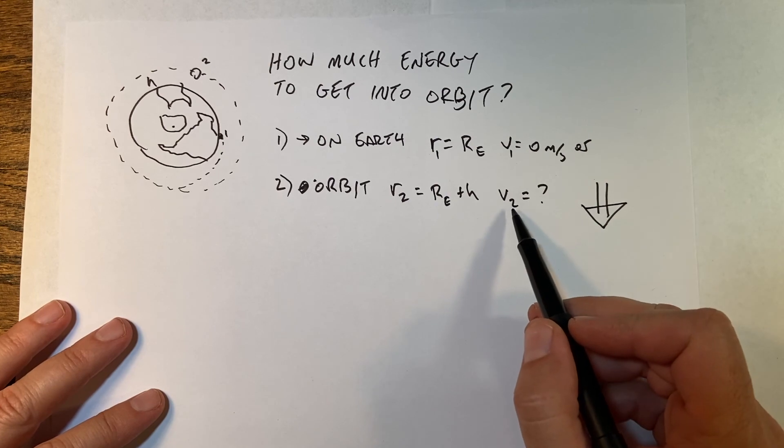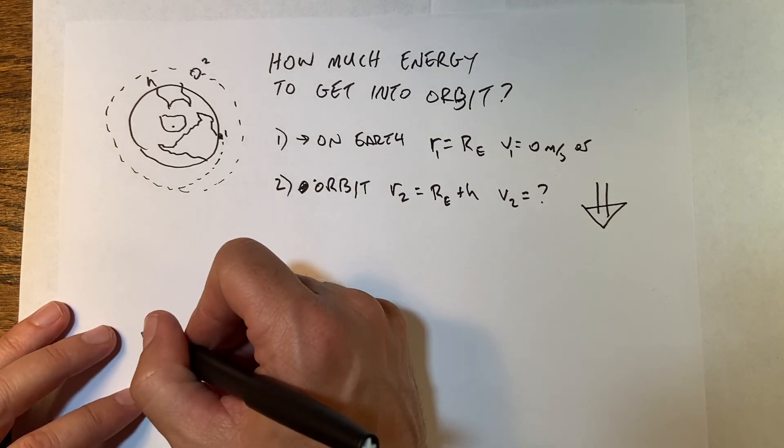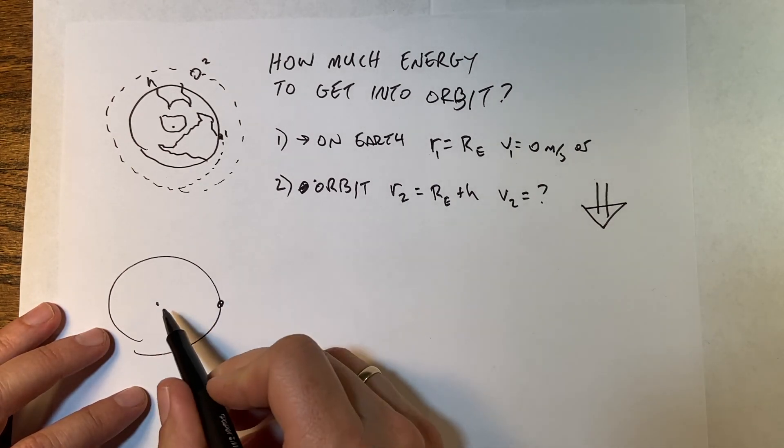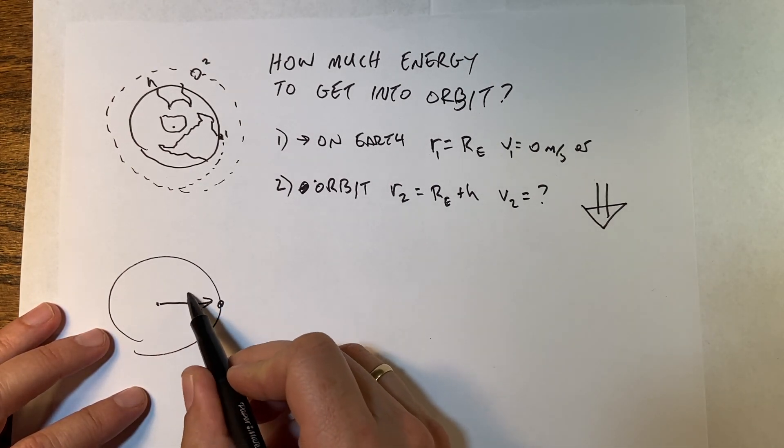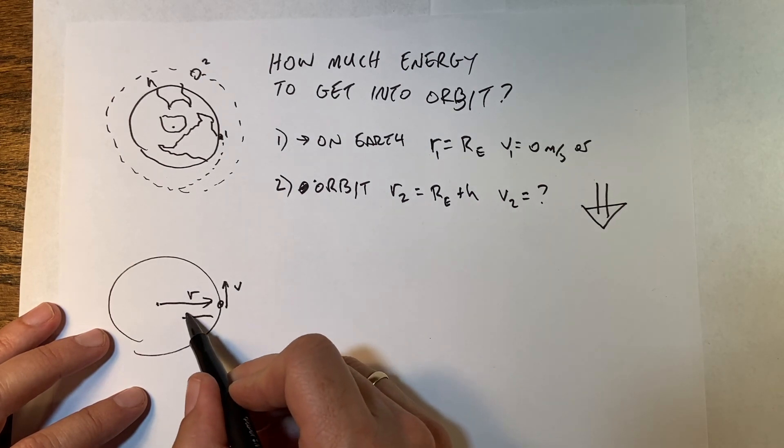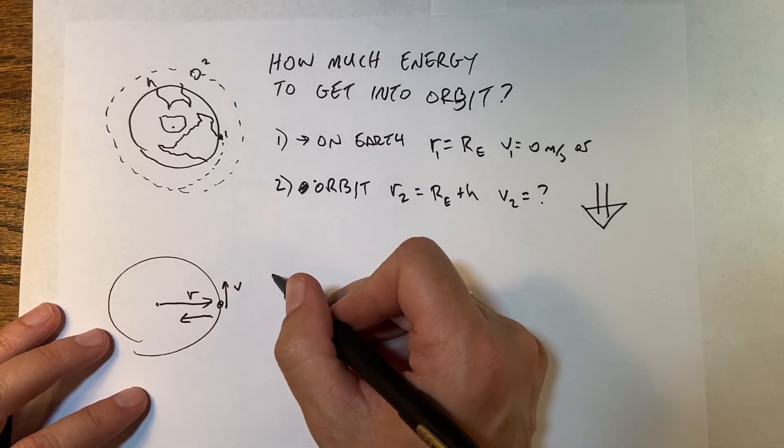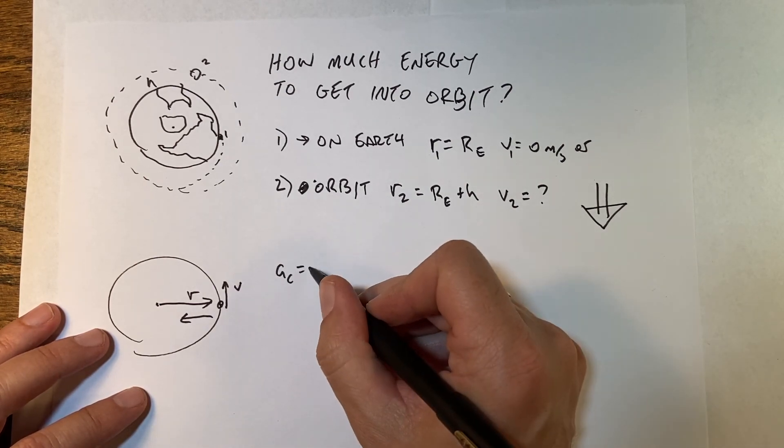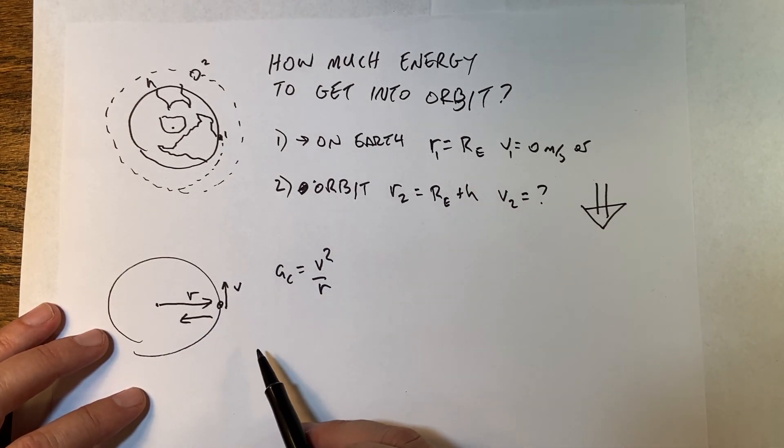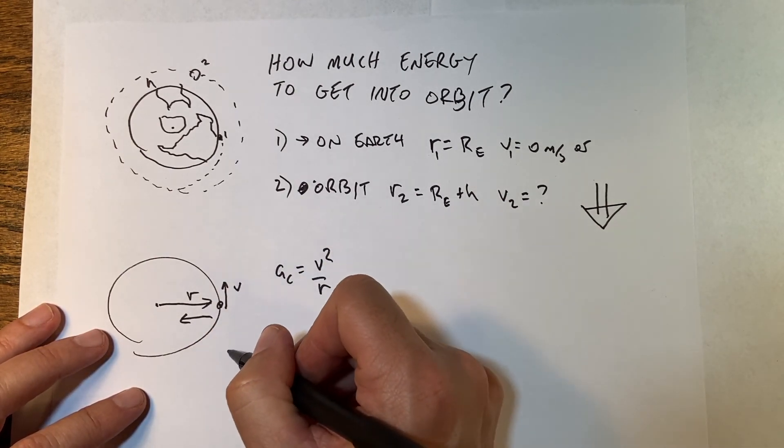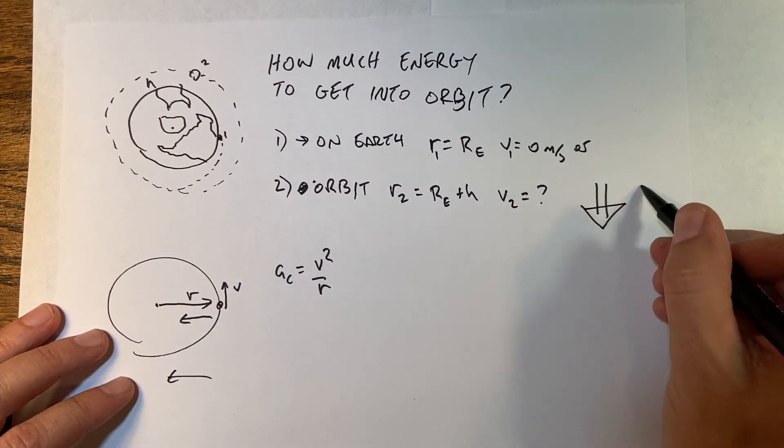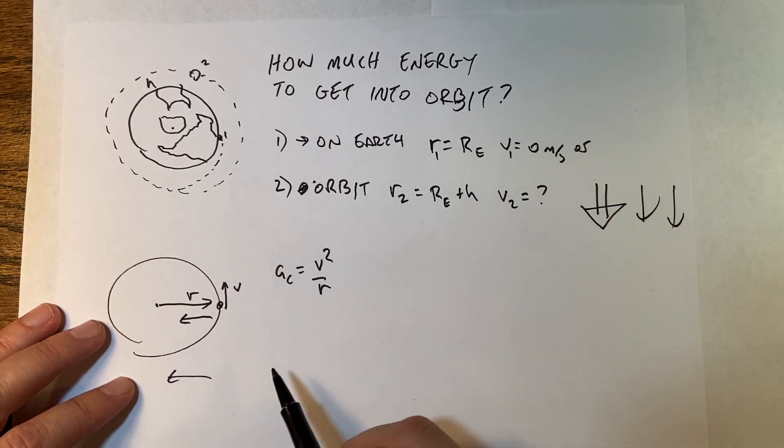This is low earth orbit. So r2 is going to be re plus h. It also has a velocity and we need to know what that is, because it has to be moving in order to stay in orbit. I will put down below a video about the velocity to move in a circular orbit.